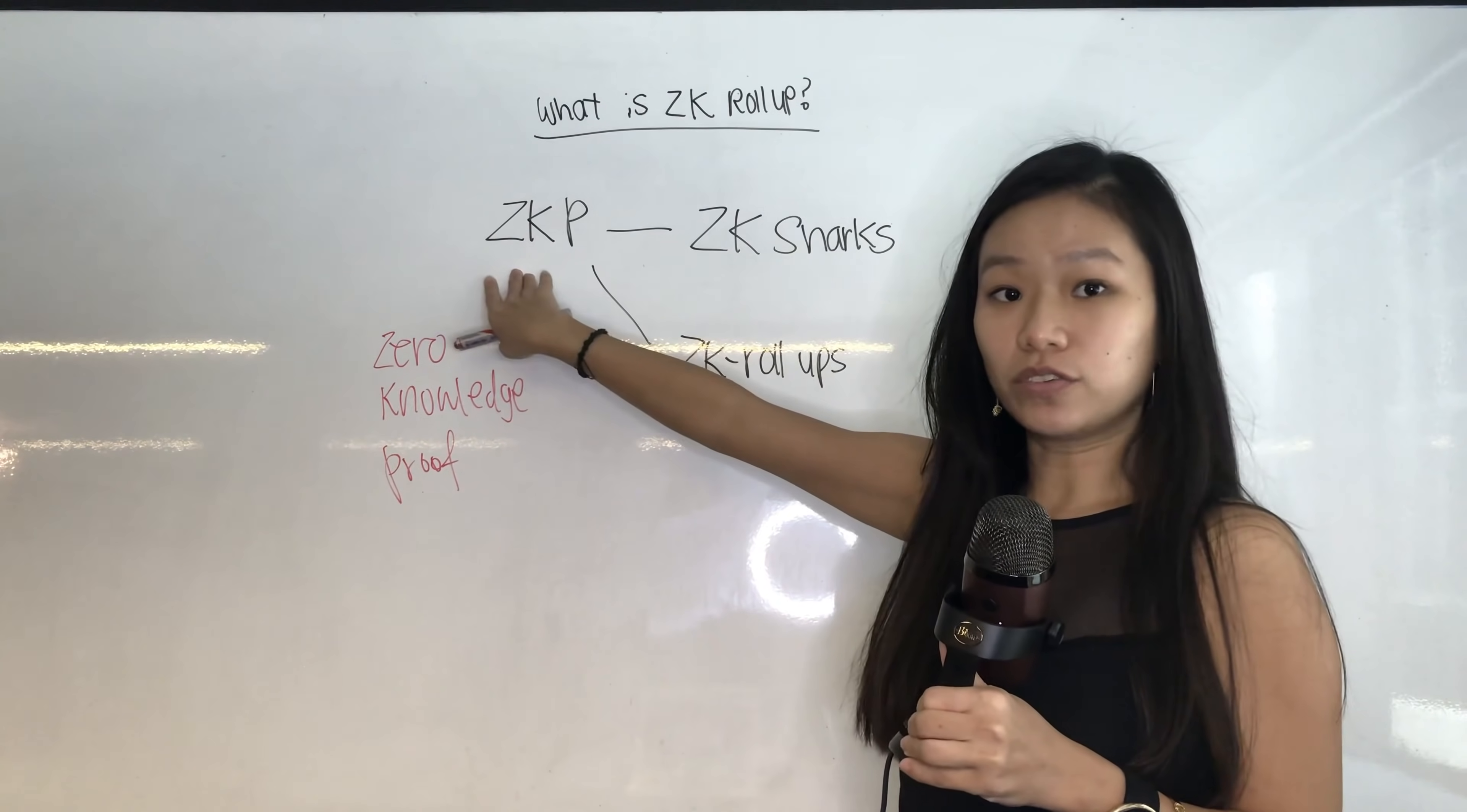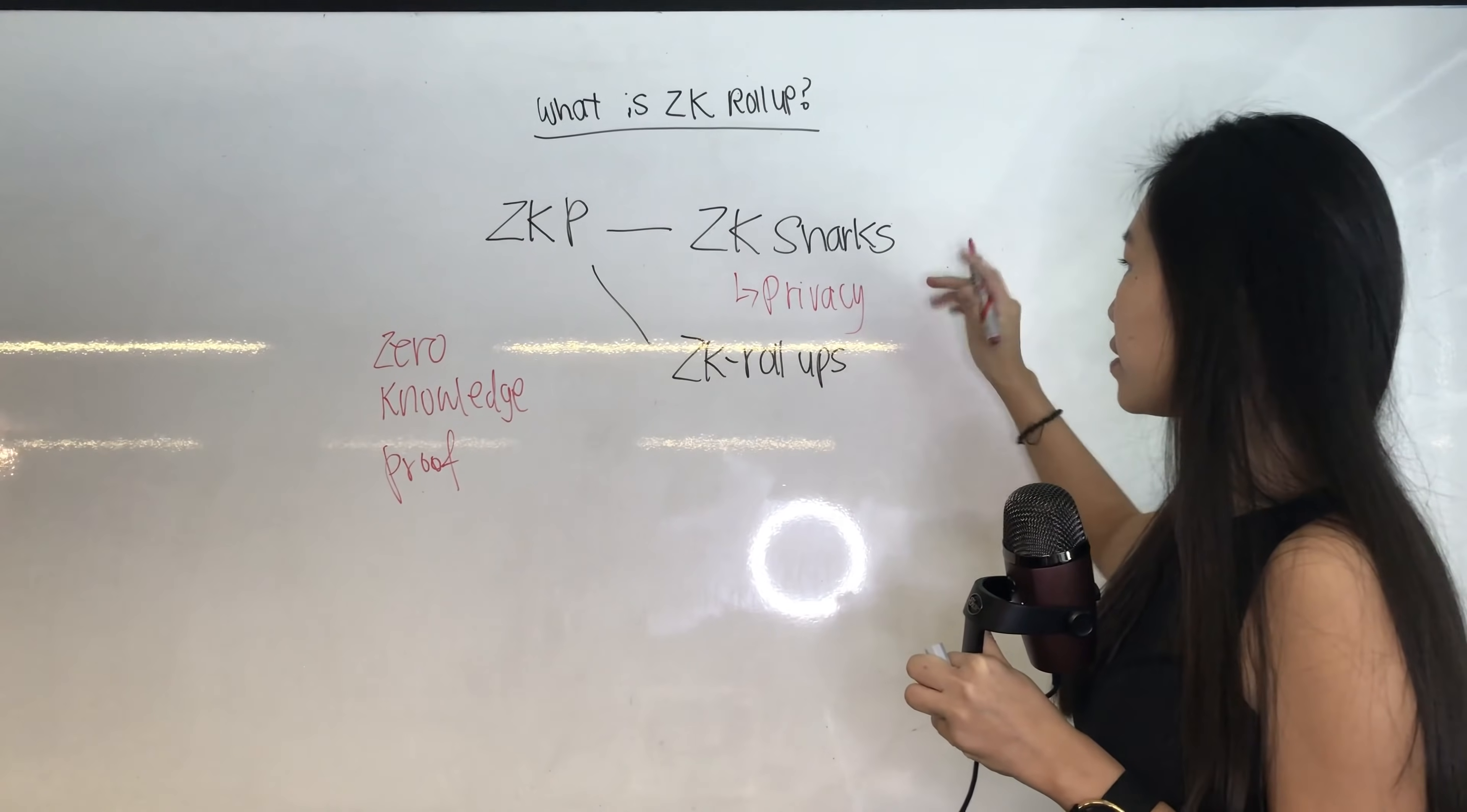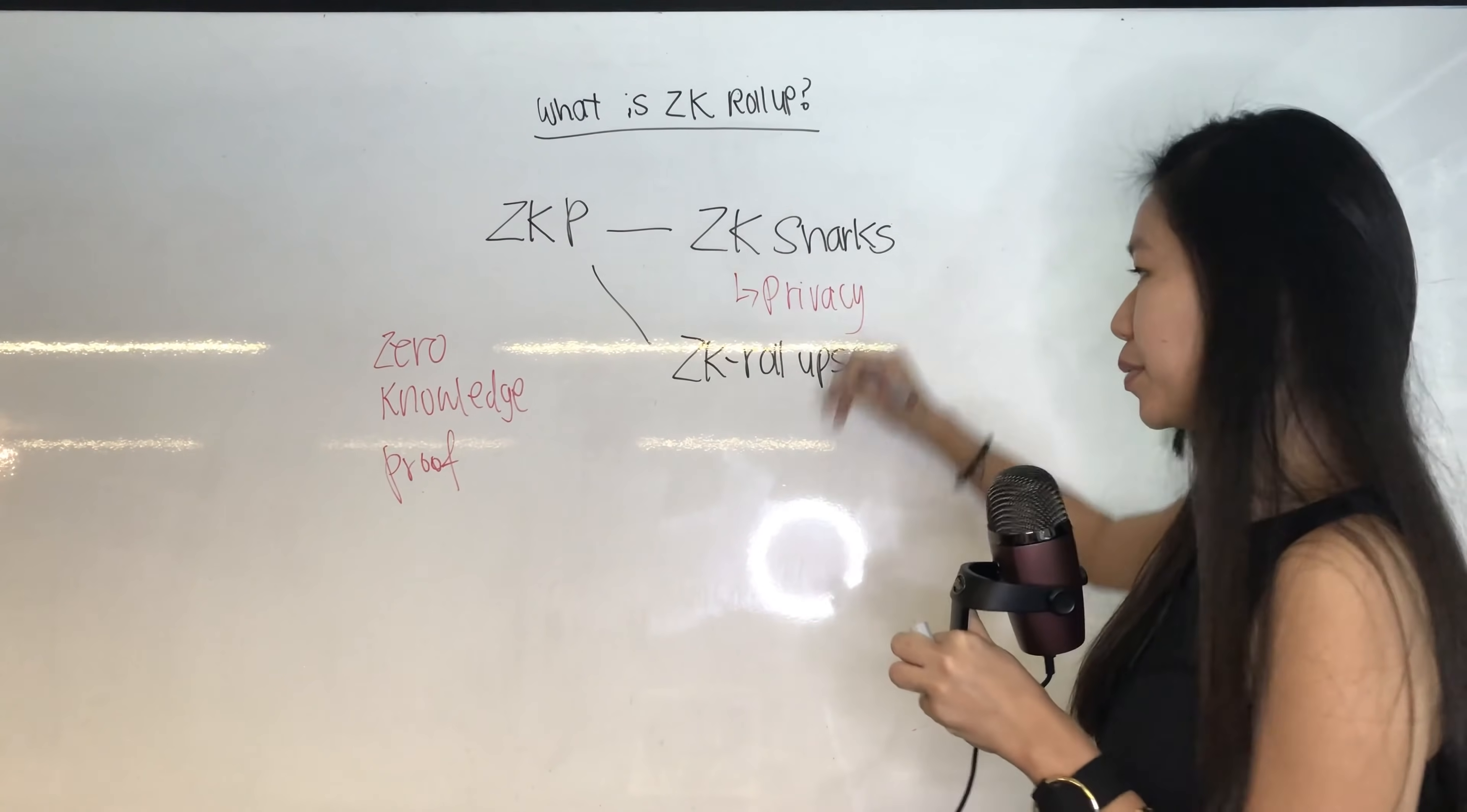In ZKP or zero knowledge, there are two applications of them in the crypto space. One is called ZK Snarks and one is called ZK Rollups. These two have very different functions. The main function of ZK Snarks is privacy. You have your Zcoin, your Zcash, these privacy coins use this protocol, this cryptography called ZK Snarks. So it's zero knowledge proof, one of the terms. Snarks is an acronym and it means something else.